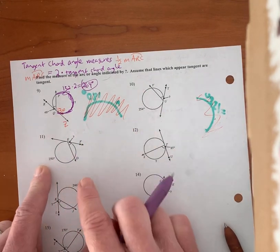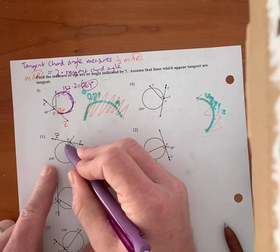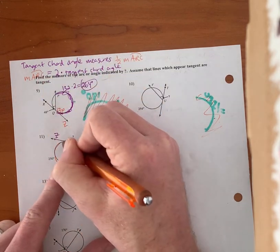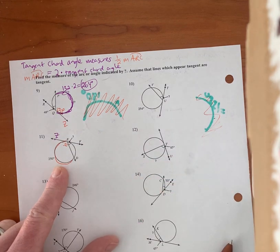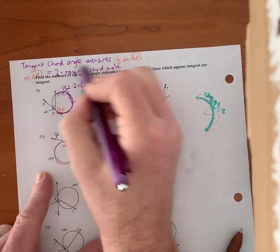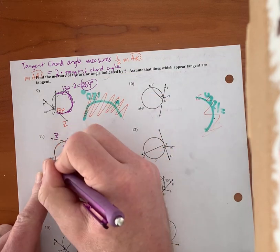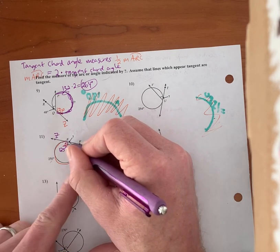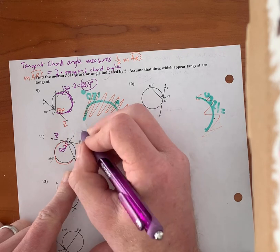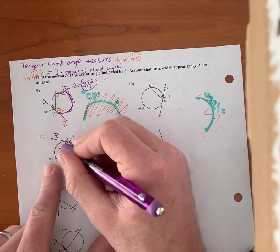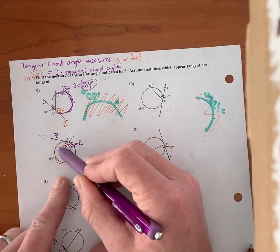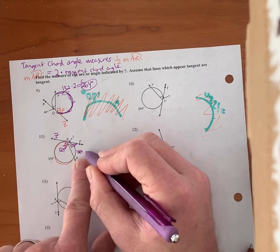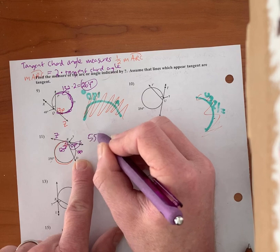This arc is 250 degrees. My tangent chord angle is one-half whatever the intercepted arc is, so I take 250 divided by 2 and get 125 degrees. This is actually asking for the supplement of that, which is 55 degrees. I can double-check: if this arc is 250, the other arc is 110 because 250 plus 110 is 360. Divide 110 by 2 and I get 55 degrees. There we go — 55 degrees is my answer.